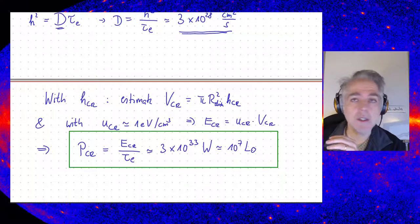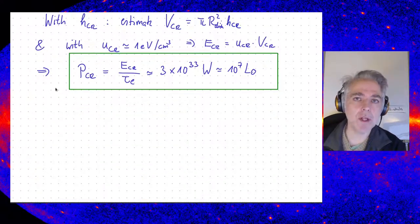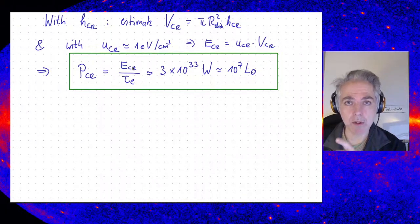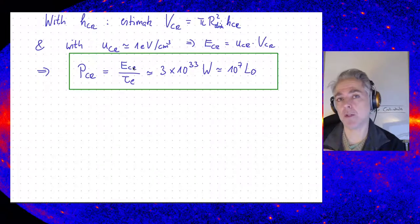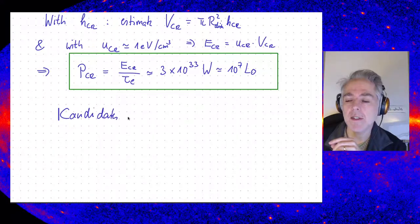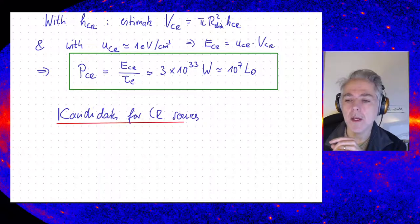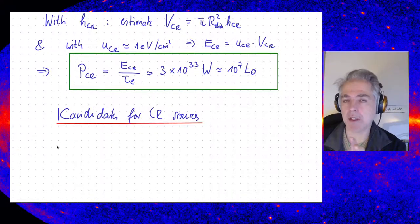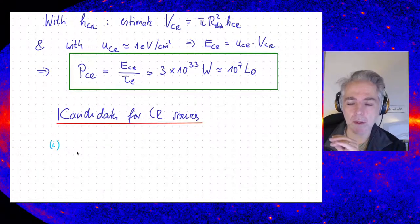Let's consider possible source candidates. We need an accelerator that provides that much power in charged cosmic rays and accelerates them to follow a power-law spectrum. I'm just grabbing two possible candidates — there are many others like pulsars — but I'm putting here two examples. One example would be Wolf-Rayet stars.